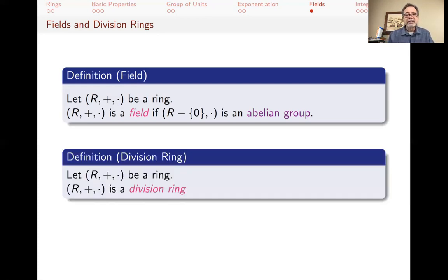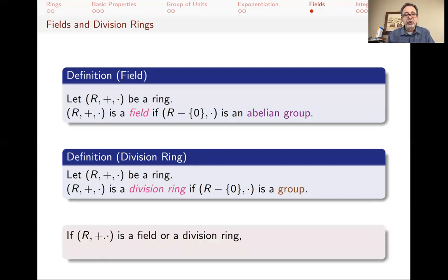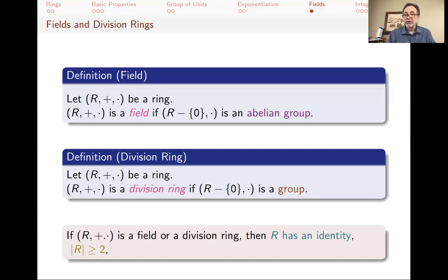A field and a division ring are very similar — the only difference is that a field has commutative multiplication. In a field or division ring, you must have an identity (the identity of the group), at least two elements (otherwise throwing away zero leaves an empty set), and the group of units is everything other than zero.